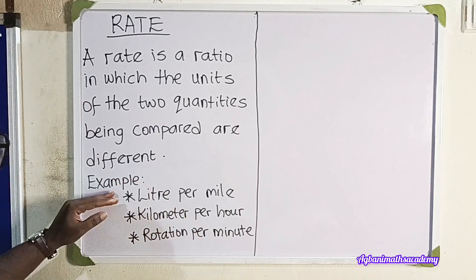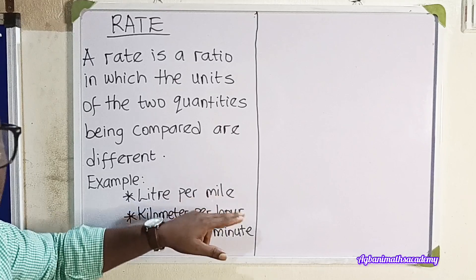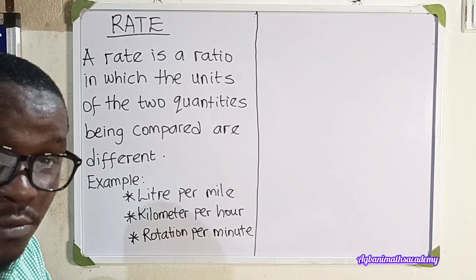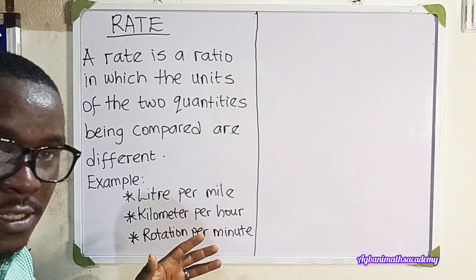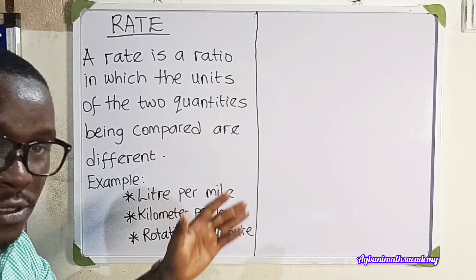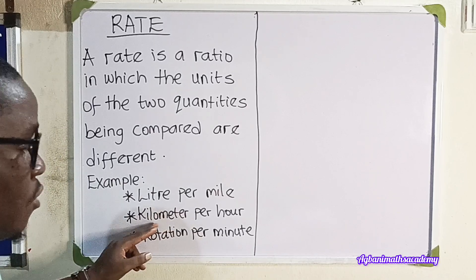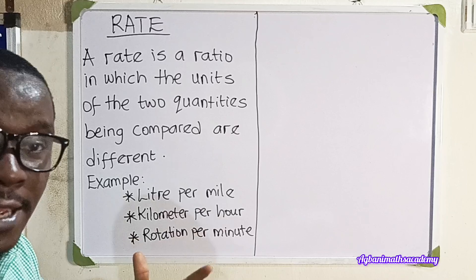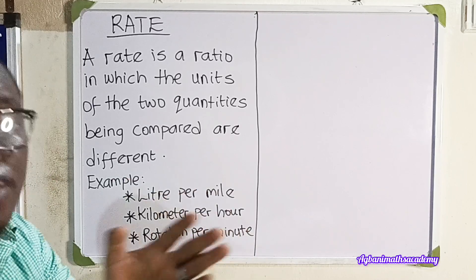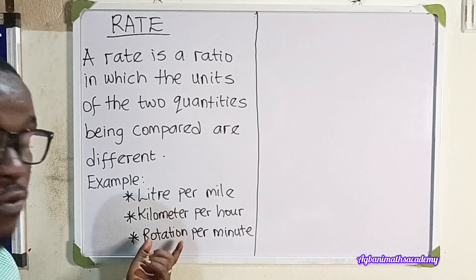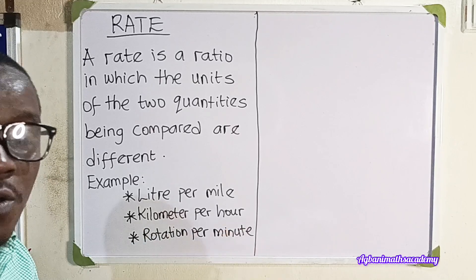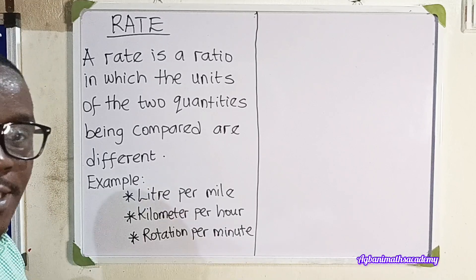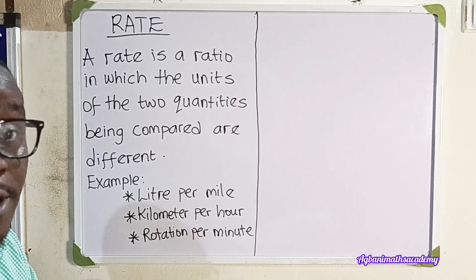Let's look at some examples. We have liters per mile — liters talks about liquid volume, and miles talk about distance, so we are comparing volume to distance. Here, kilometers per hour: kilometer is distance, hour is time, so we are comparing distance to time. In another example, rotations per minute — we are comparing how many times an object turns per minute. You can see that we are comparing objects that have different units.